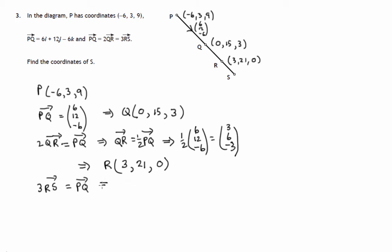In other words, traveling from R to S is one third of the journey from P to Q. So whatever we did in going from P to Q, we must do a third of that. So RS will be one third of (6, 12, -6).